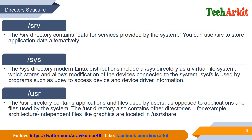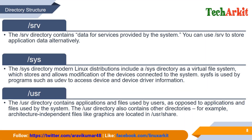Architecture-independent files like graphics are located in /usr/share. These are not critical files for the system itself, but they are important files for users and content. For example, if you install a monitoring system, it may be stored under /usr/local. This is the main purpose of /usr — to store data that is important to users but not essential for the core system.